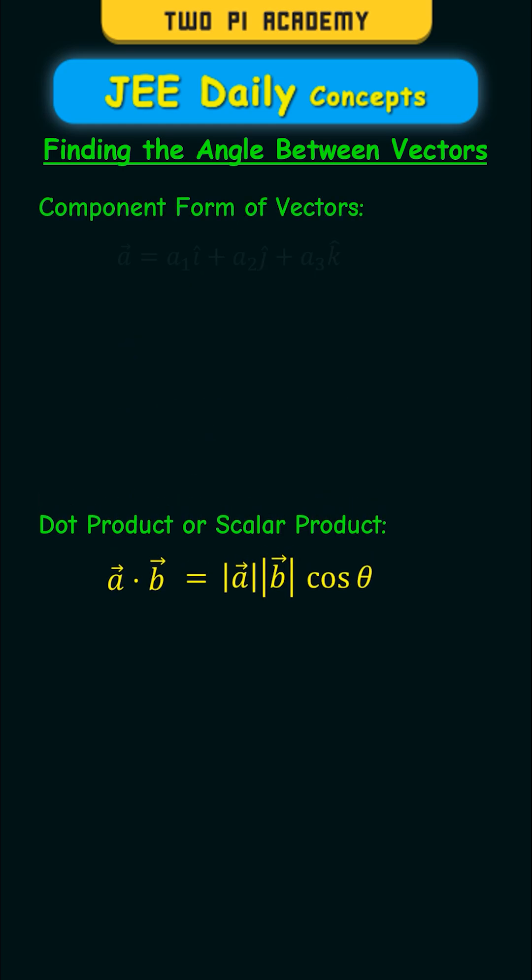Now how is this helpful in finding the angle between vectors? So consider the following as the component forms of the two vectors, vector a and vector b. Then in that case, the magnitude of vector a is given by the following formula and similarly you can find the magnitude of vector b.